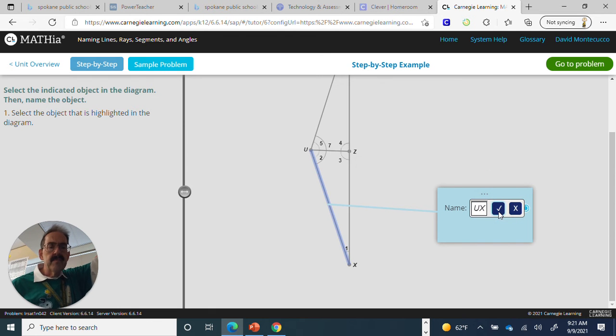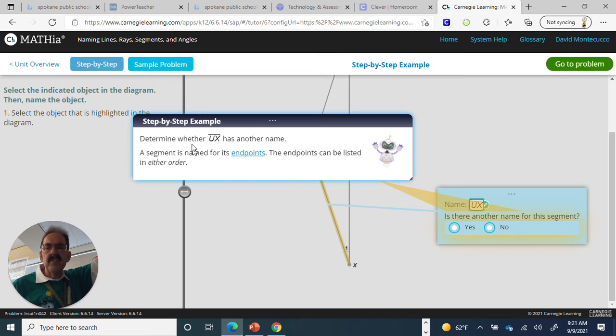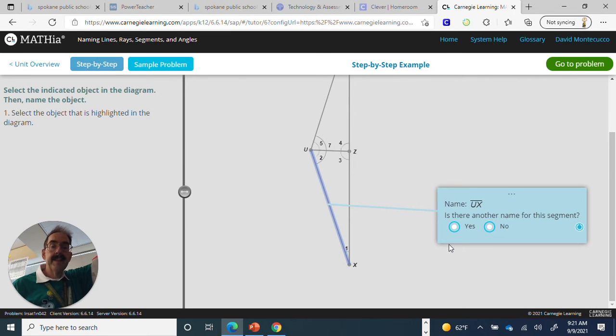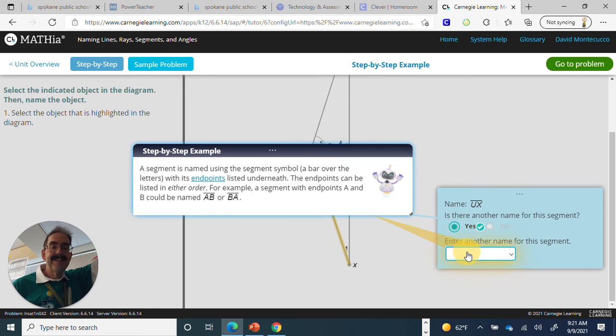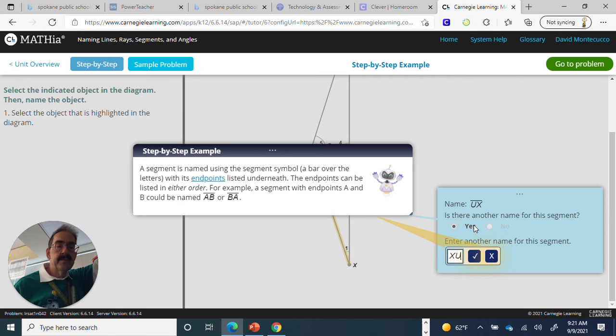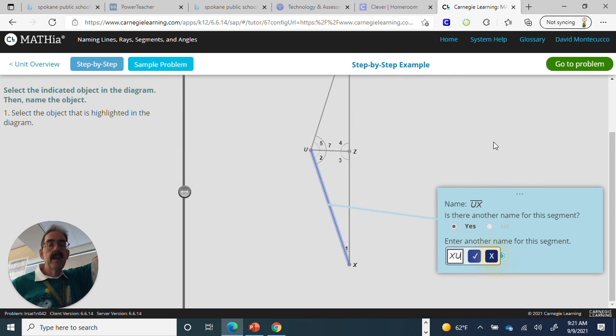The enter was a little on the slow side, so I used the mouse, and there it goes. Determine if UX has another name. It does have another name, XU. So we're going to click on the segment, and then we'll go XU, hit enter, and we're good to go.